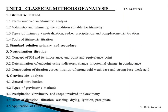In Unit 2 it will be classical methods of analysis. Here you have to learn the titrimetric method — different terms involved in titrimetric analysis, what is volumetry and titrimetry, the conditions suitable for titrimetry, their types: neutralization, redox, precipitation and complexometric titrations. Then you have to learn different tools used in titrimetric analysis, and standard solutions — primary and secondary solutions.